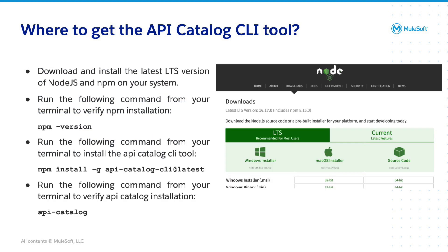To install the API Catalog CLI tool, first you must download and install the latest LTS version of Node.js and NPM on your system. Go to www.nodejs.org to install them. To make sure you have the latest version of NPM installed, run the following from your terminal: npm --version. Next, after you've downloaded and installed the latest LTS version of Node.js, install the API Catalog CLI tool by running the following command from your terminal: npm install -g api-catalog-cli@latest.